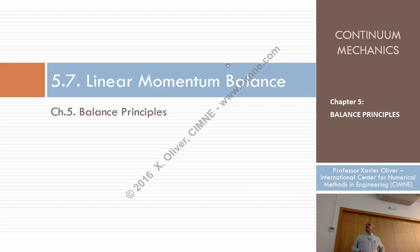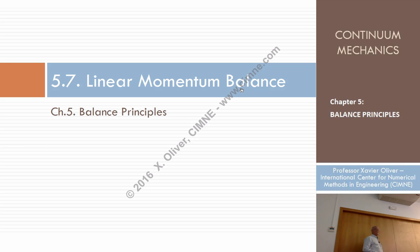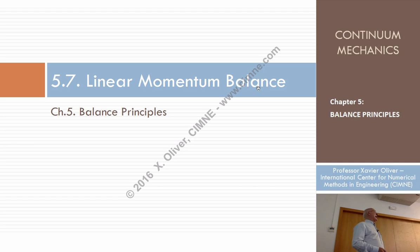We are going to enter into the second postulate, which is the linear momentum balance. What is momentum? Mass times velocity. Linear momentum — why? Because there is another momentum, which is the angular momentum. Linear momentum is mass times velocity. And 'balance' — look, we are not referring now to conservation. I'm not postulating that linear momentum is conserved. I'm just postulating that linear momentum is balanced.